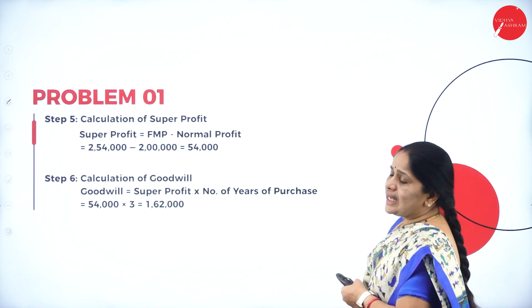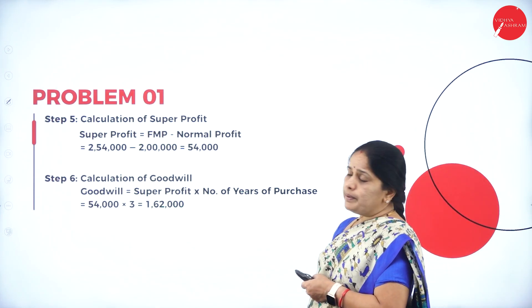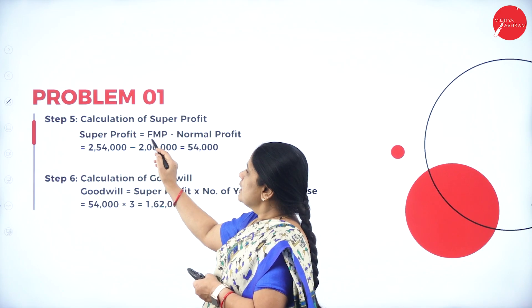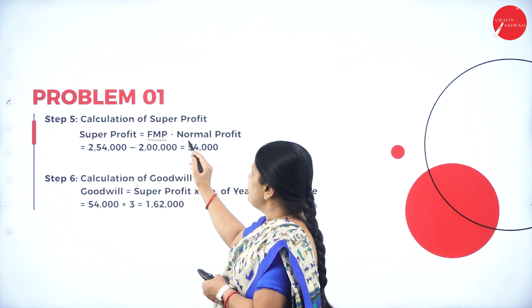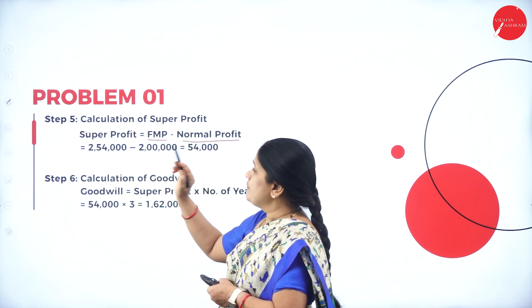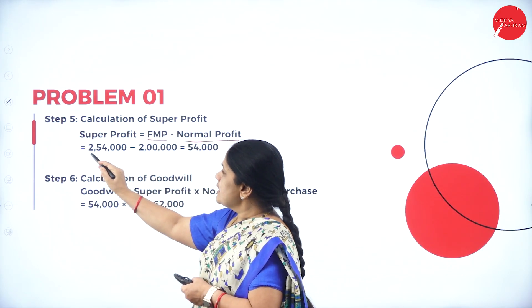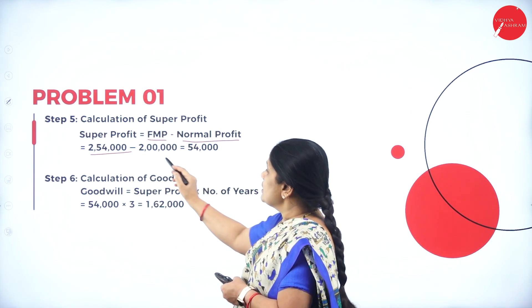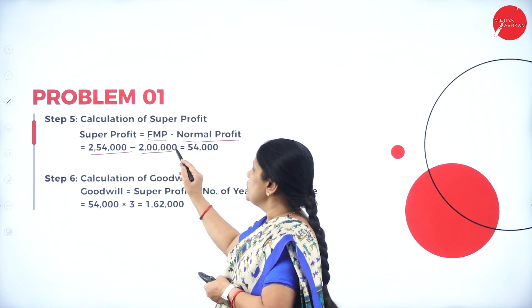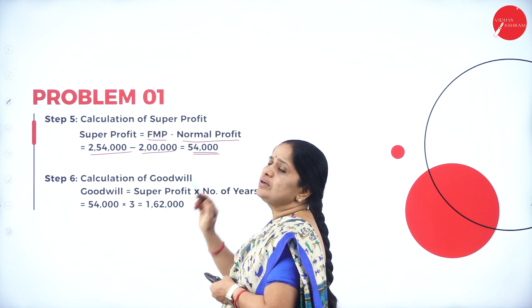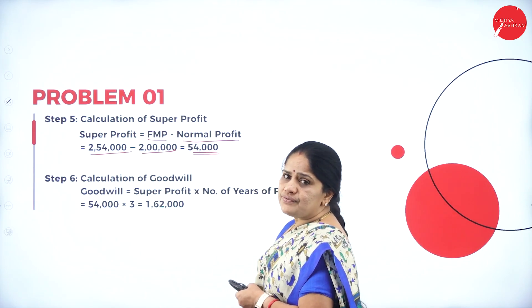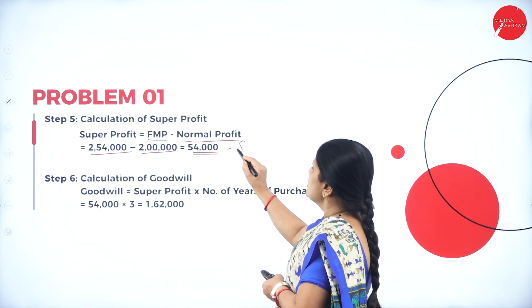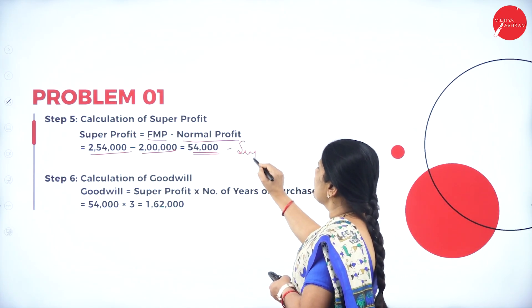Now we calculate super profit: FMP minus normal profit. FMP is 2 lakhs 54,000 and normal profit is 2 lakhs, so the difference is 54,000. This becomes the super profit.